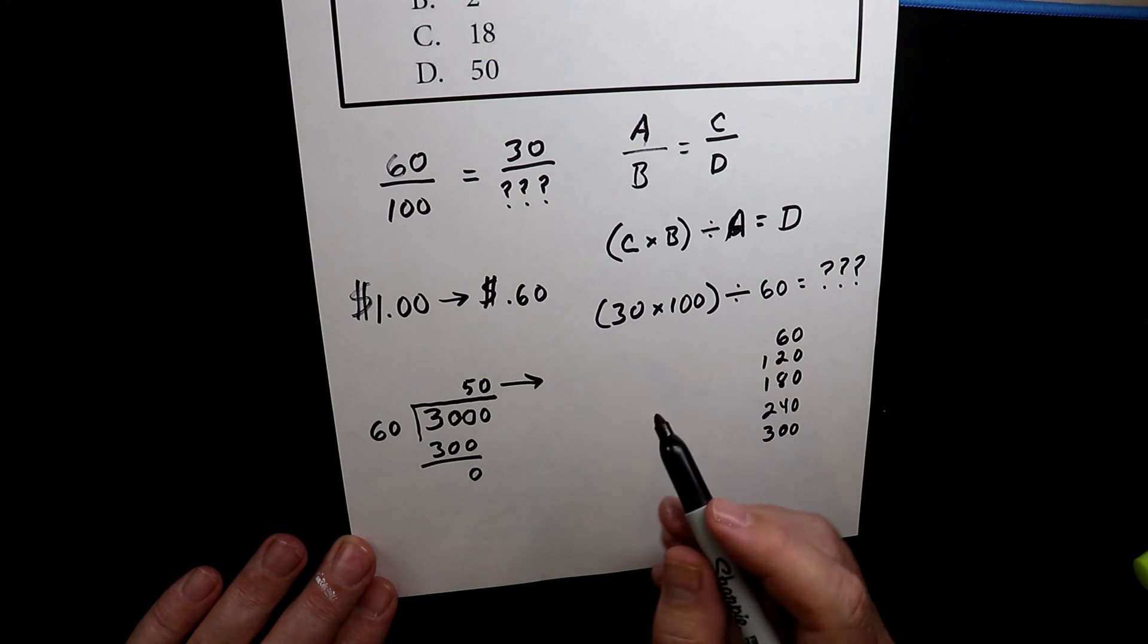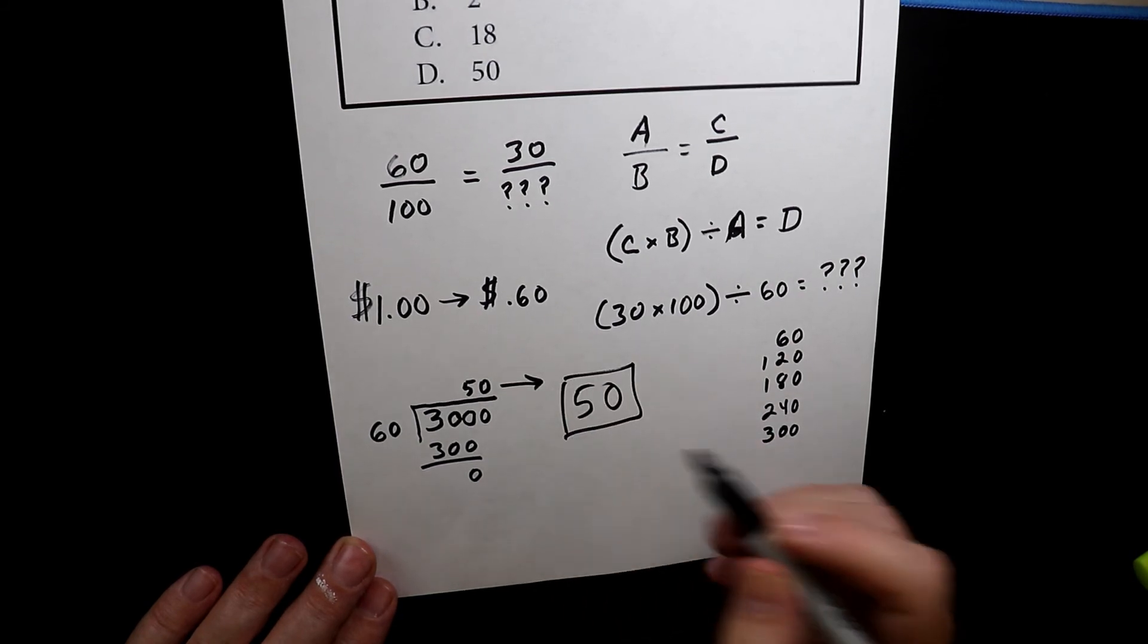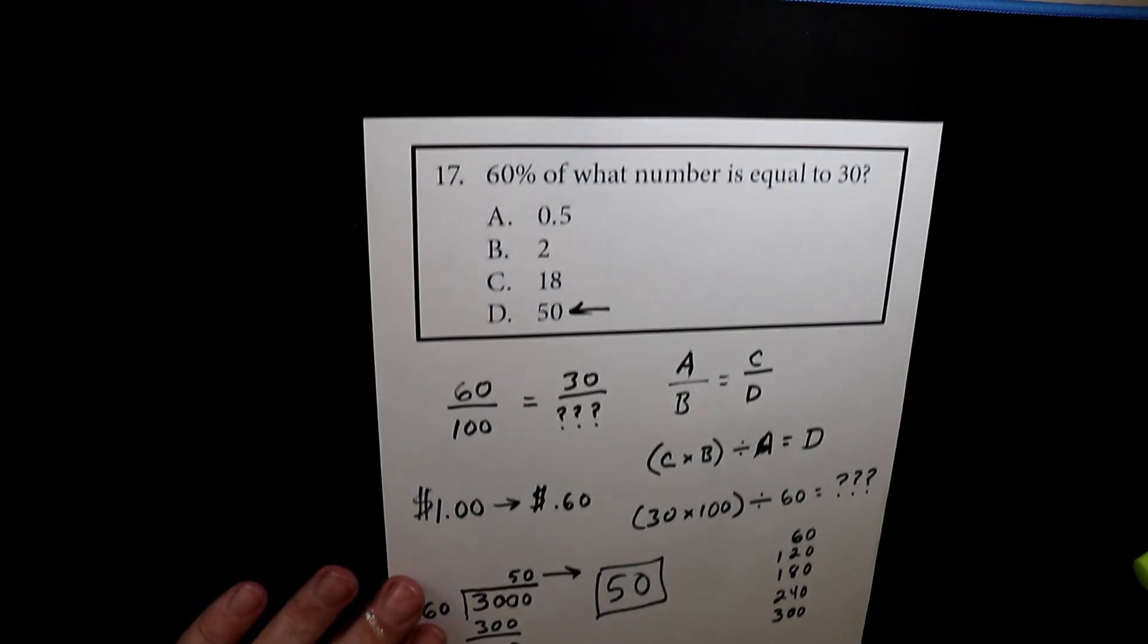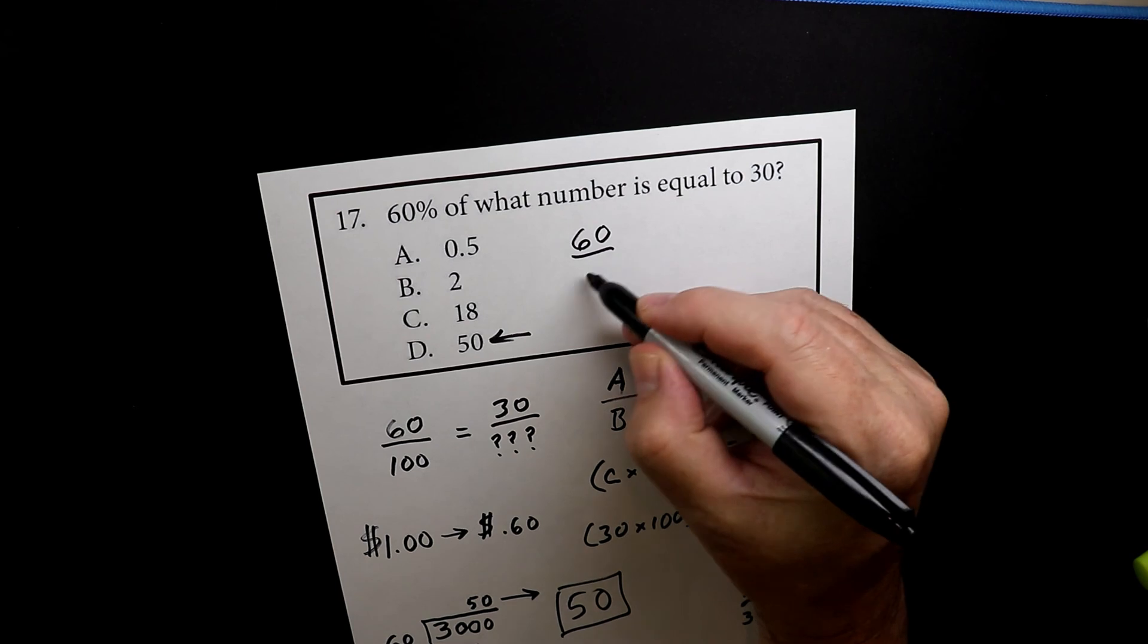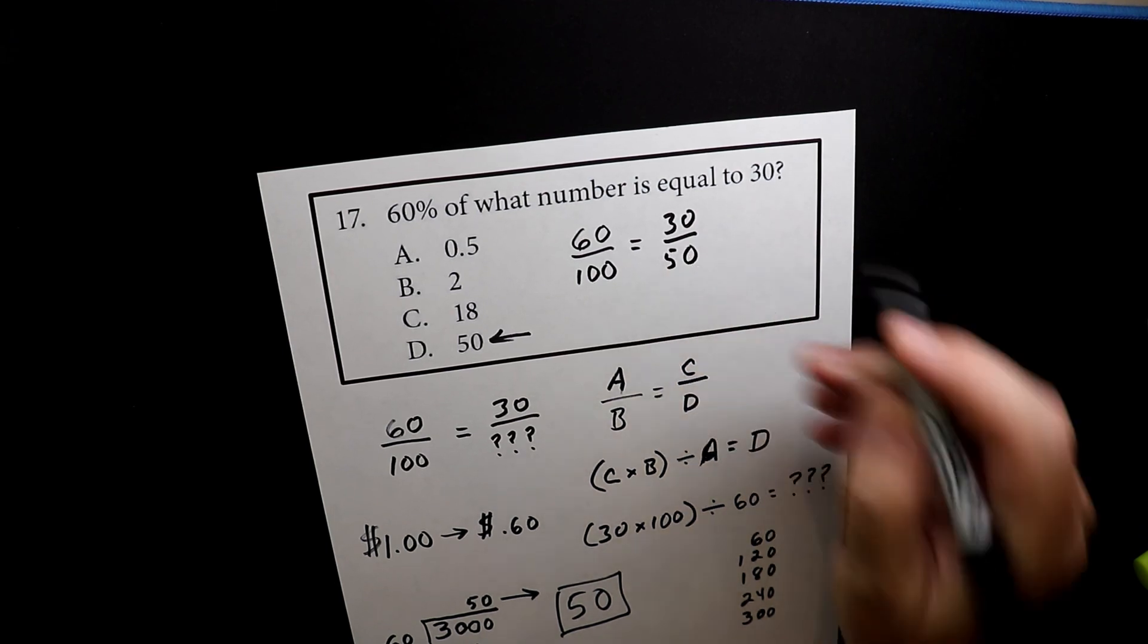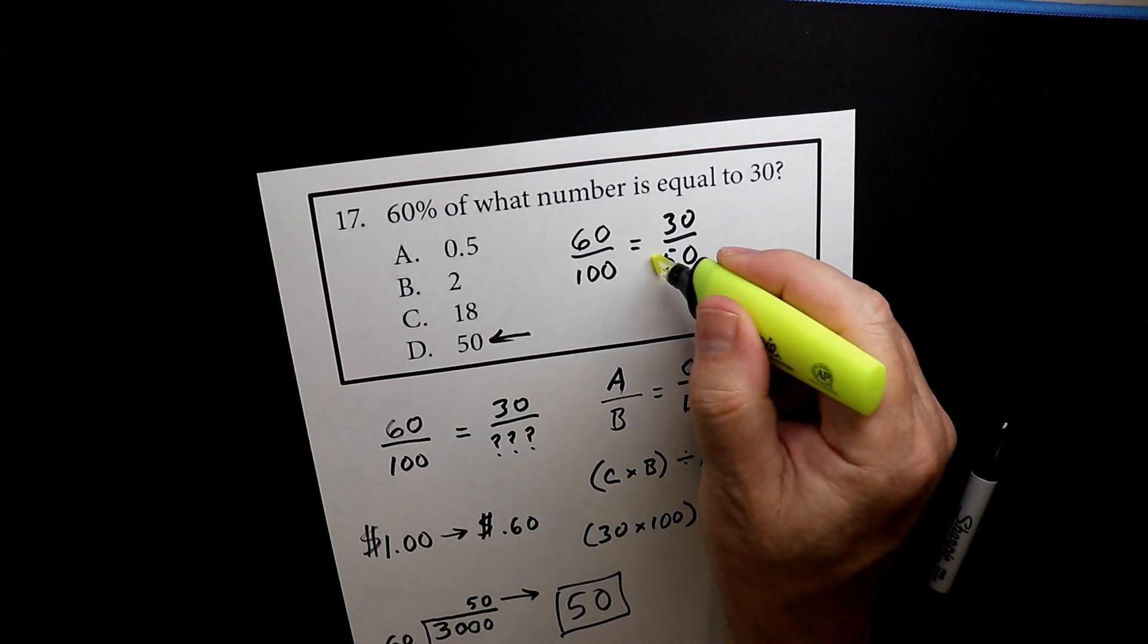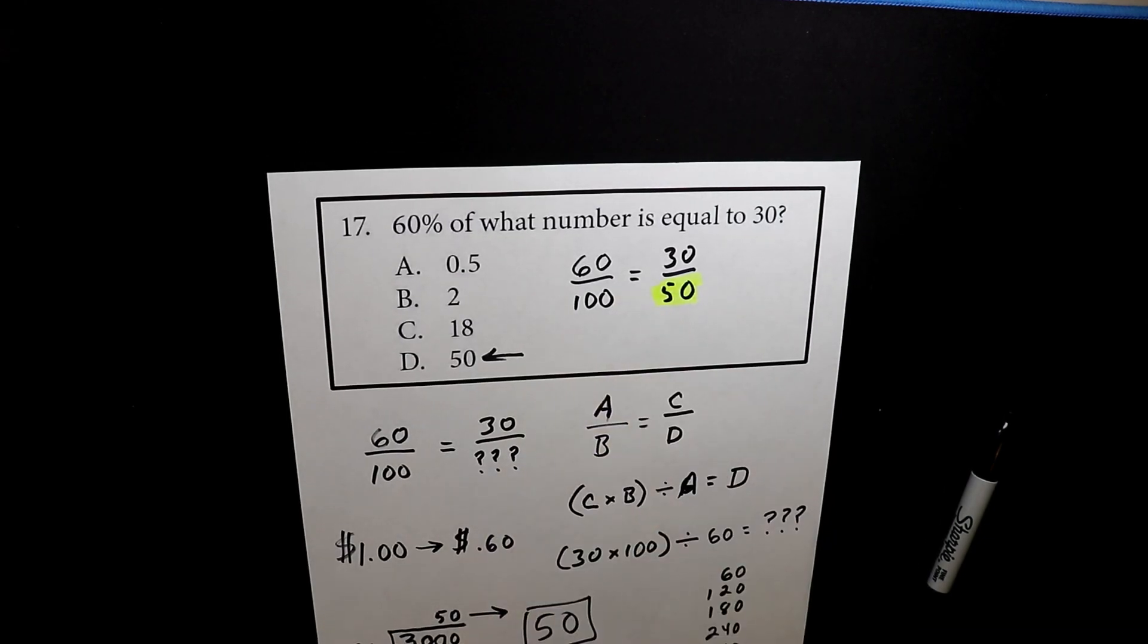So then I see, oh, 50 is our final answer. I look over here. Too small, not right. Boom. D. So the proportion would be 60 to 100 equals 30 over 50. And that's another way you can think about it by setting up this proportion, setting up that ratio, setting up that fraction.